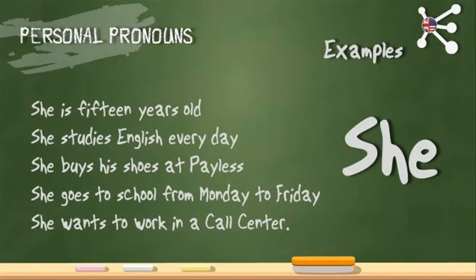Personal pronoun: She. Pronombre personal: Ella. She is 15 years old. She studies English every day. She buys her shoes at Payless. She goes to school from Monday to Friday. She wants to work in a call center.